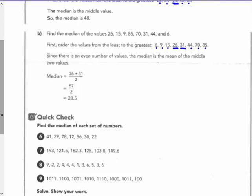So, add those together, find their mean, divide by 2. So, you get 57 divided by 2, which is 28 and a half. So, the median is exactly halfway between 26 and 31, which is 28.5.